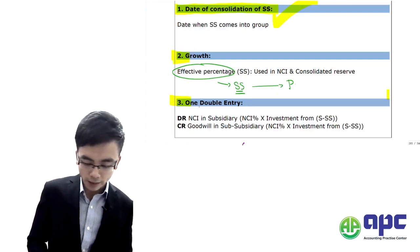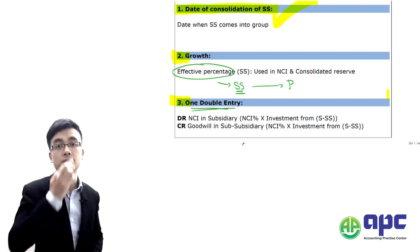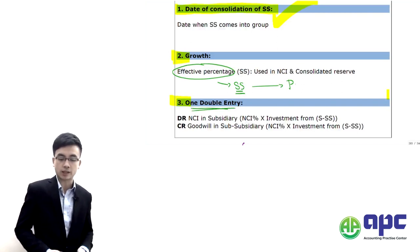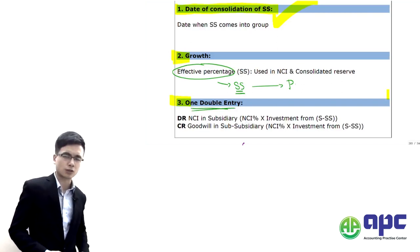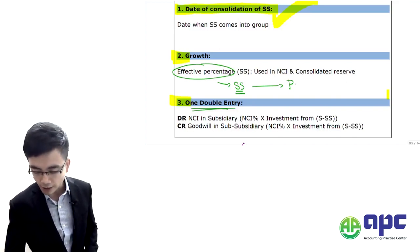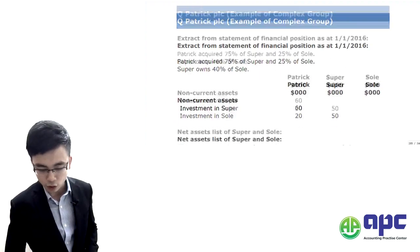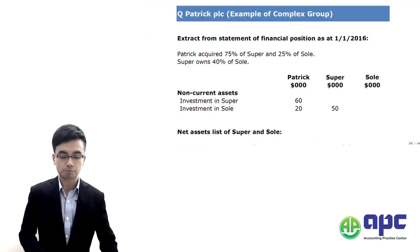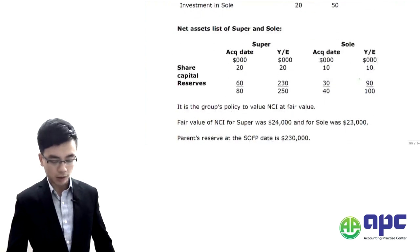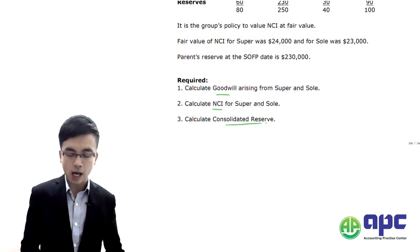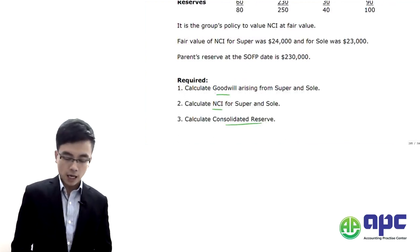The third difference: we need to make one double entry — debit the NCI and credit the Goodwill. The best way to understand this is to work through the question called Patrick Pioce. The required calculations are Goodwill, NCI, and consolidated reserve, using the same approach as before.